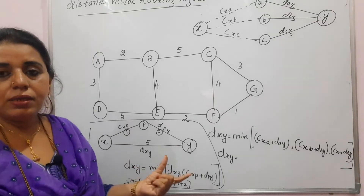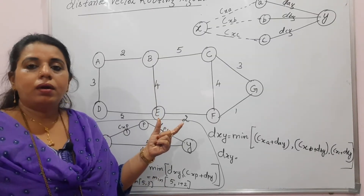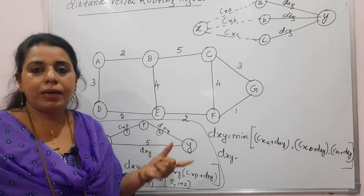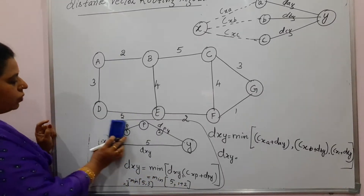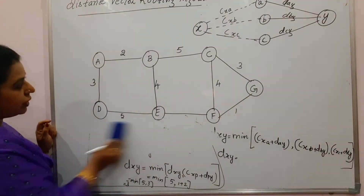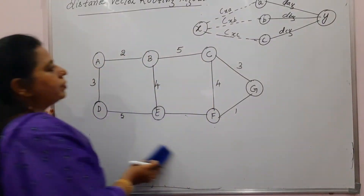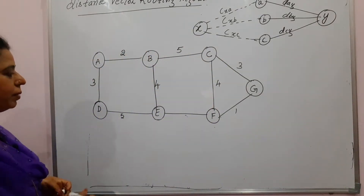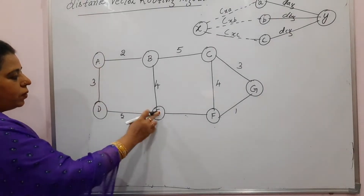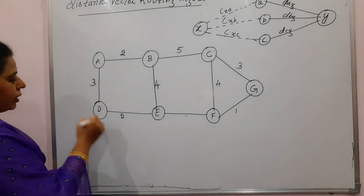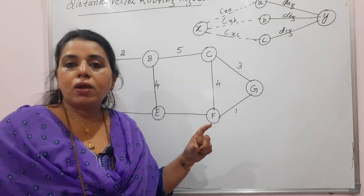This is what the Bellman-Ford equation says, and it is the main logic in the distance vector routing algorithm. Let me give you one example to determine the forwarding table using the distance vector routing algorithm for a given network graph. Before solving, I want to explain how the forwarding table is constructed — each router or node maintains a distance vector, which is a single-dimensional array storing the cost to reach all other nodes.